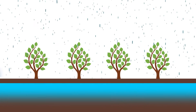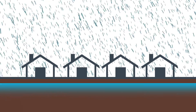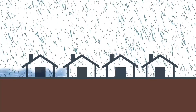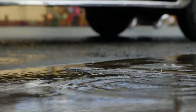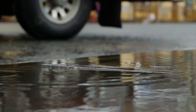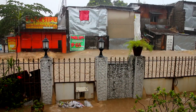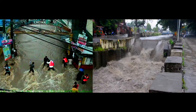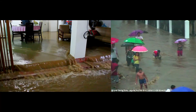For example, rainwater is prevented from infiltrating the ground and water runoff increases in these newly developed areas. When a big storm or typhoon hits, the result is massive flooding that puts people's lives and property in peril.